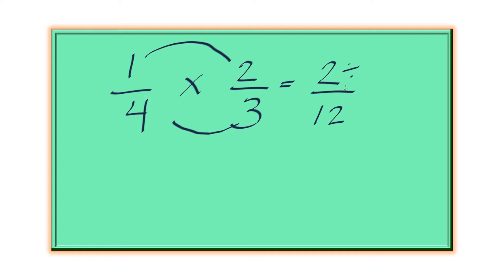Again, we reduce this 2 over 12 by 2. That's the number that can divide 2 and 12. That's the greatest common factor between 2 and 12. So we get 1 over 6.